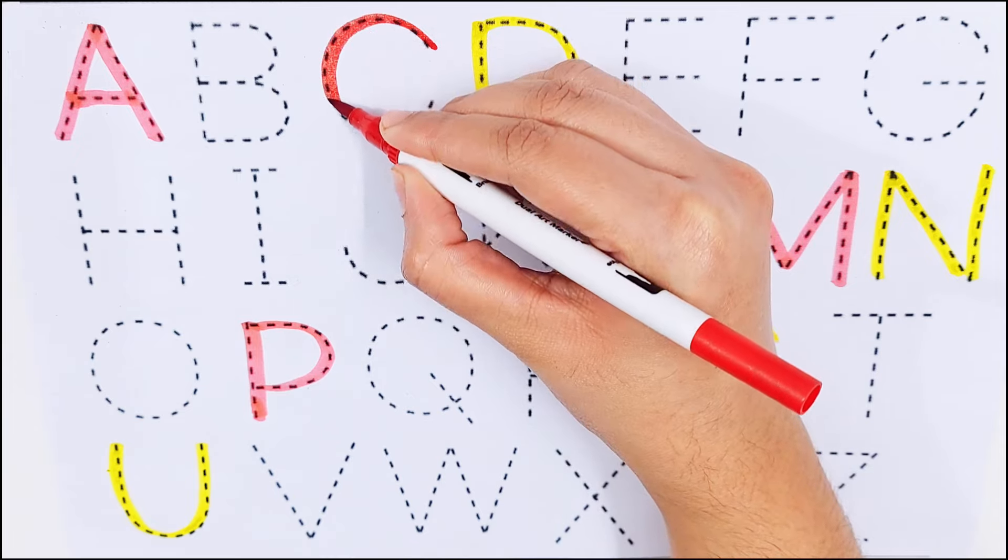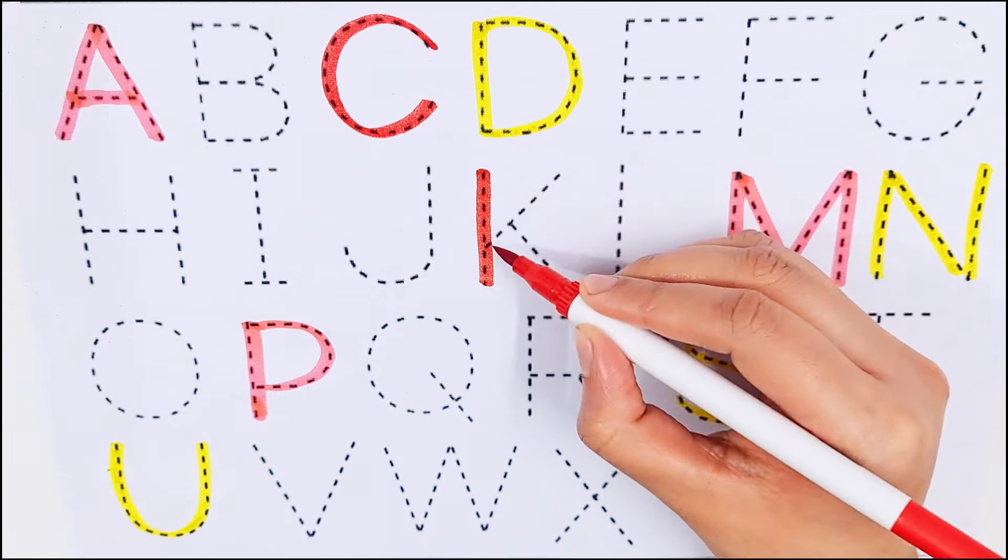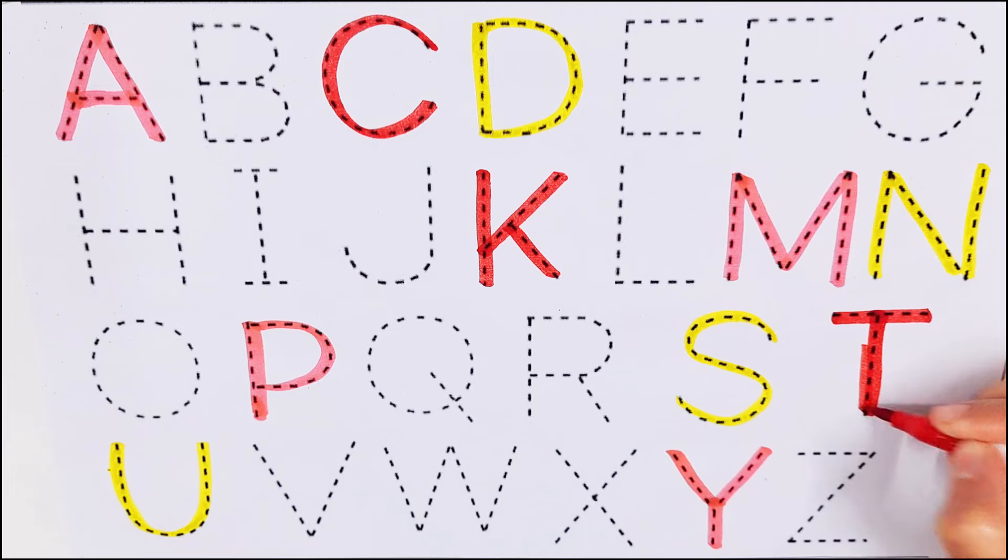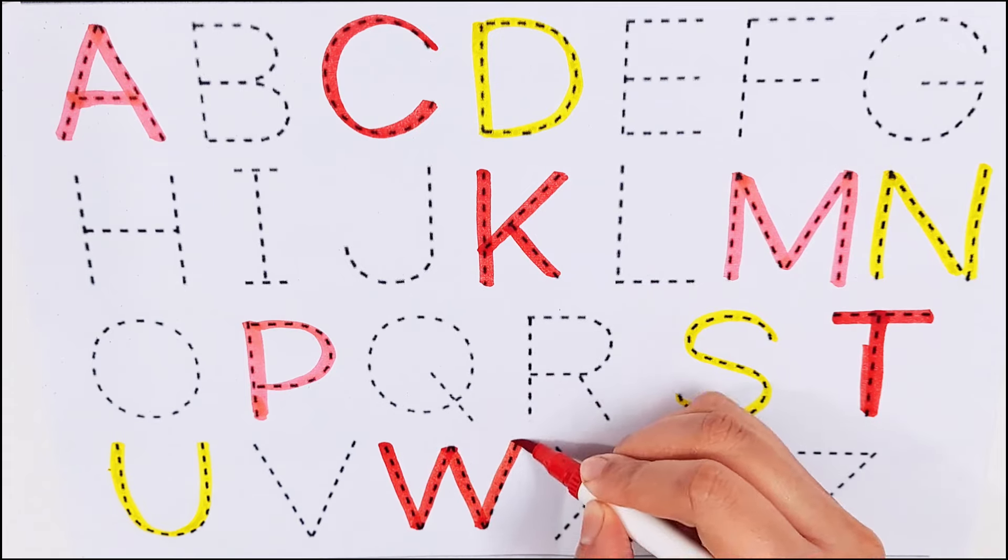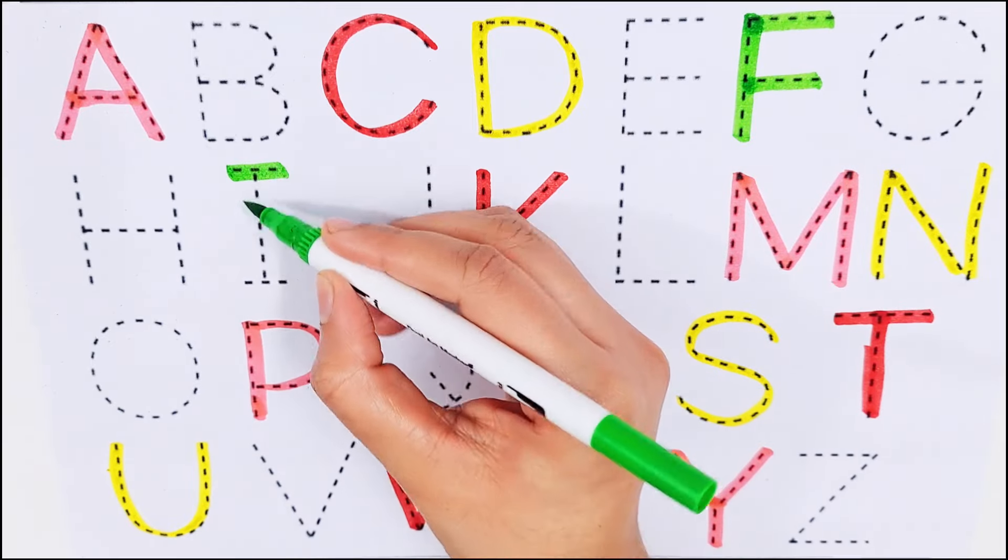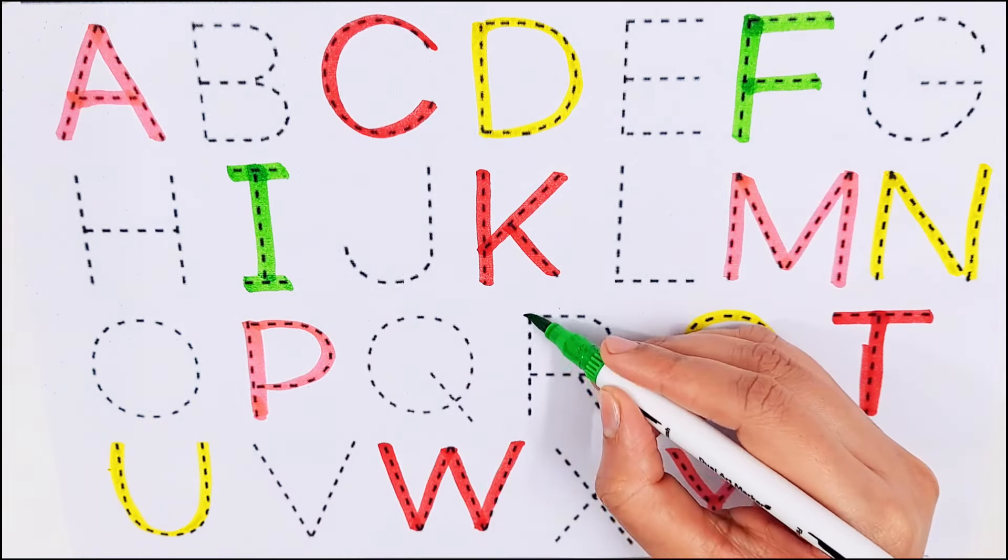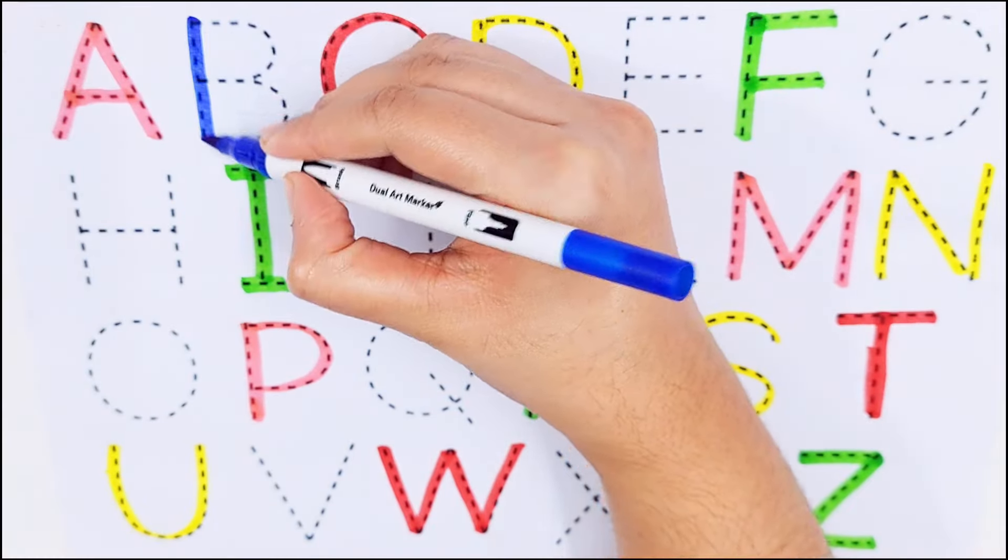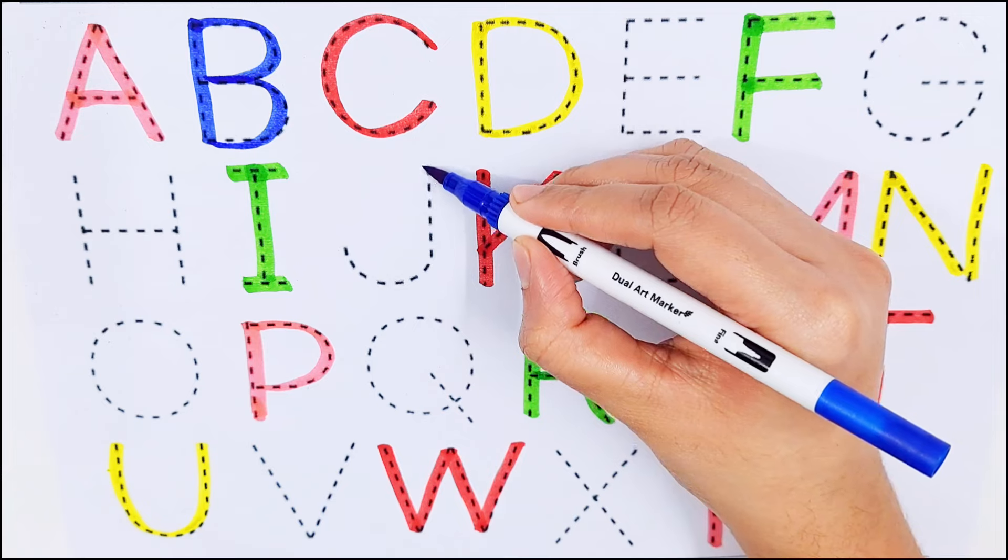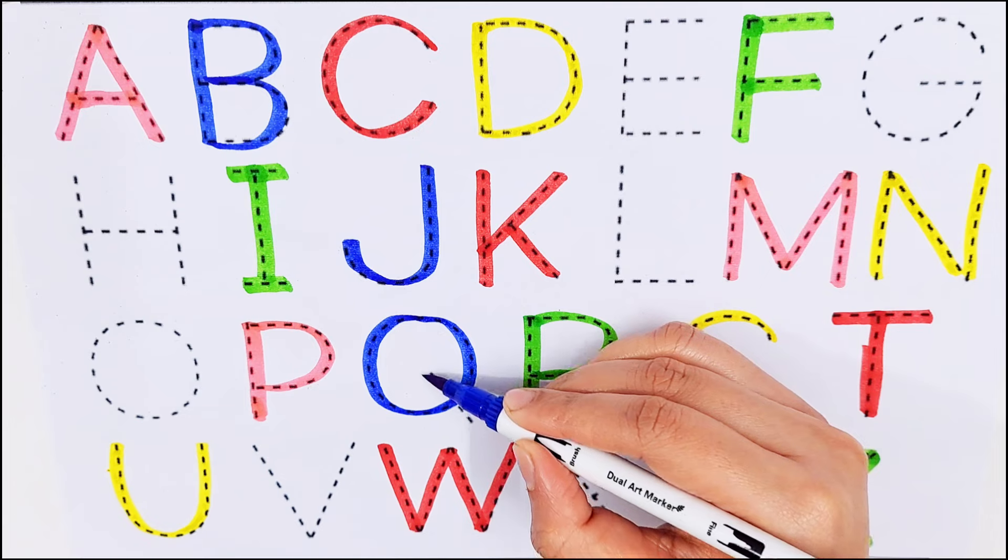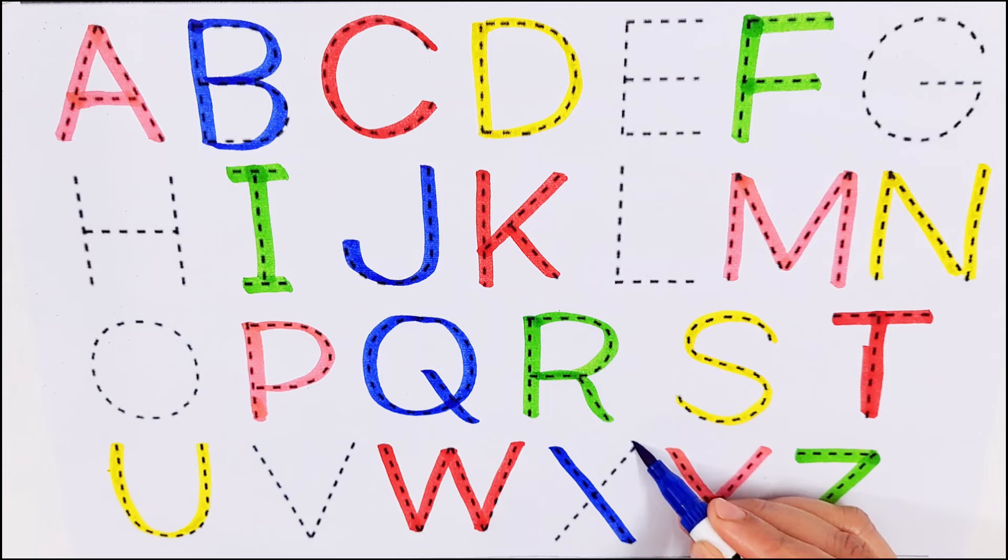C for cow, K for kite, T for train, W for watch. F for fox, I for iron, R for rose, Z for zipper. B for butterfly, J for juice, Q for quilt, X for x-ray.